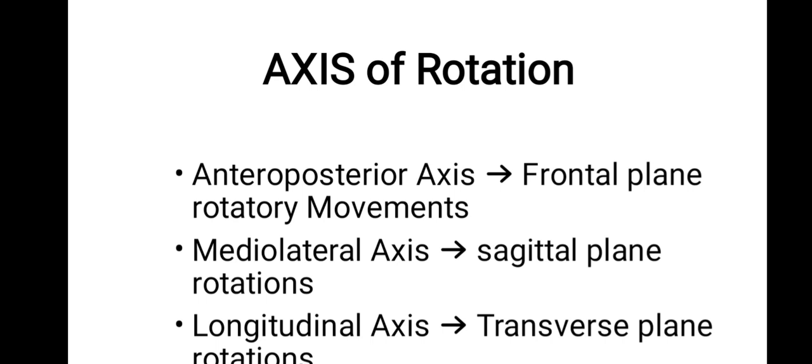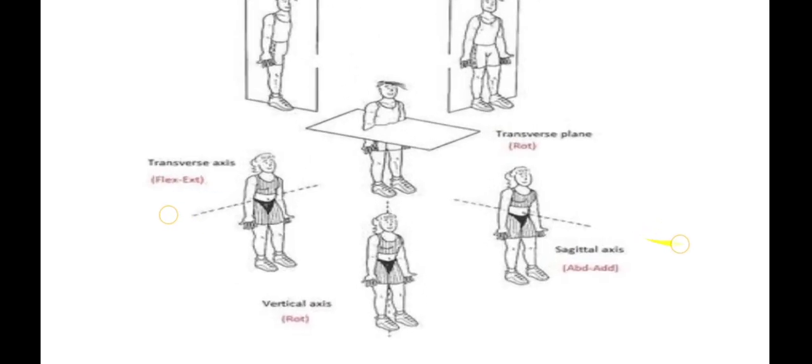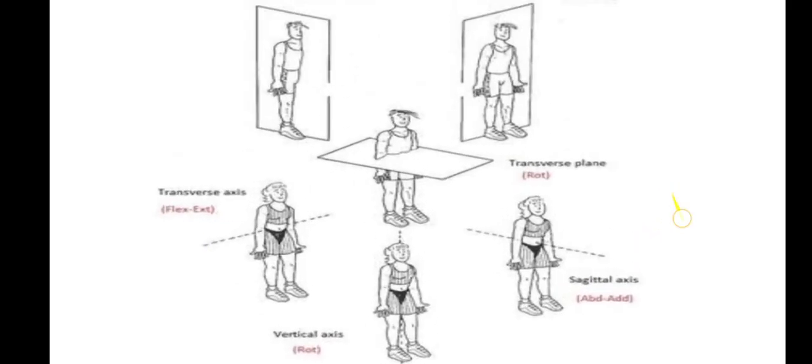First of all, we should know about the axis of rotation. The anterior-posterior axis is associated with the frontal plane, in which we study the anterior and posterior side. The medial-lateral axis corresponds to the sagittal plane — left and right. The longitudinal axis — up and down — corresponds to the transverse plane, as shown in the figure.